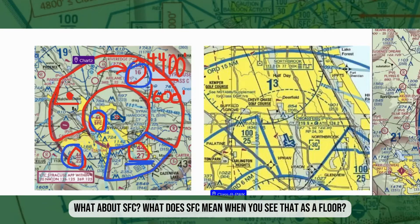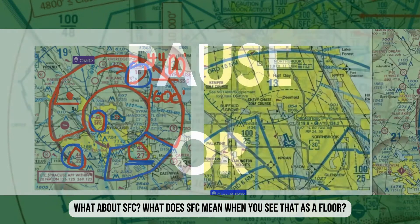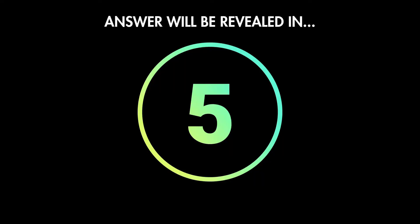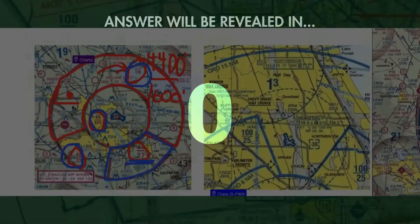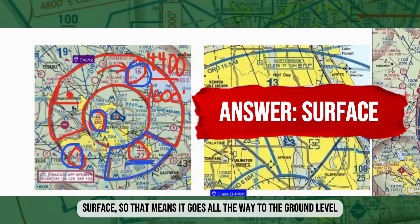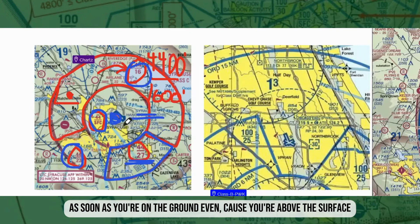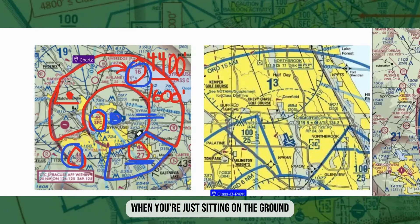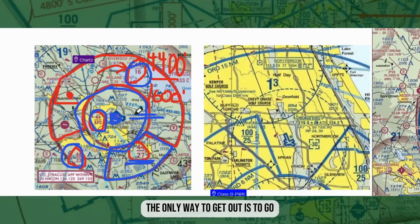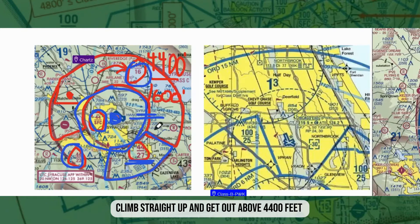What about SFC? That means surface — it goes all the way to ground level. As soon as you take off from Syracuse Hancock International, you're in the Class Charlie airspace. Even just sitting on the ground you're above the surface, so you're in it. If you stay in that inner circle, the only way out is to climb straight up above 4,400 feet.